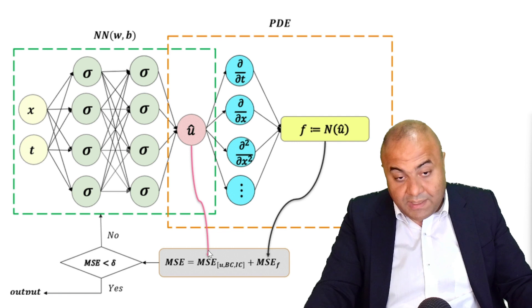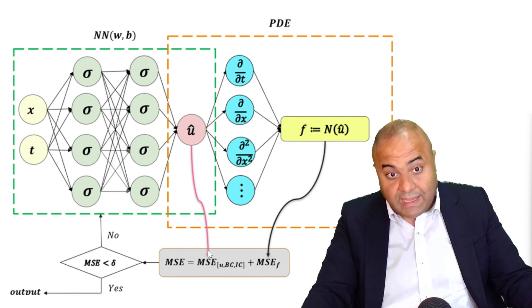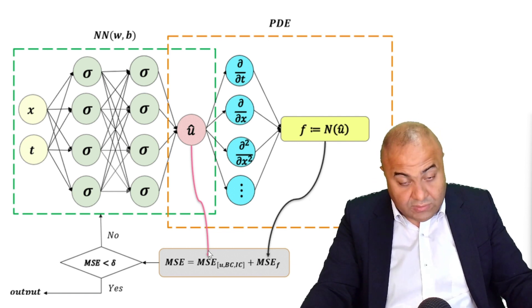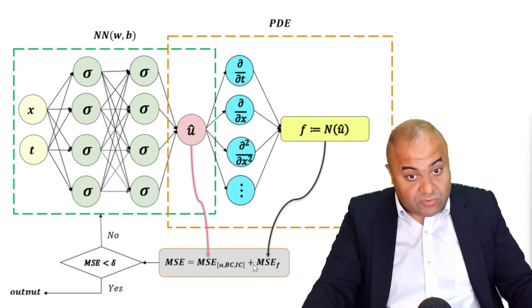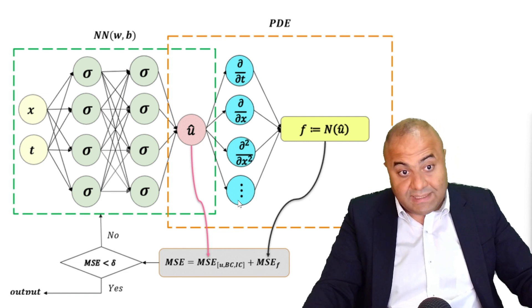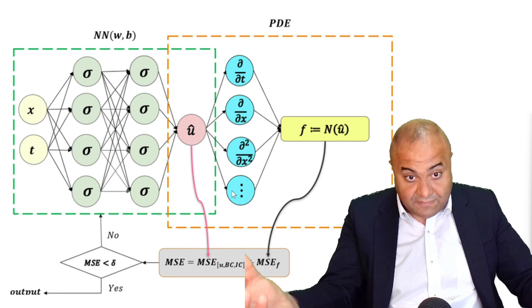The difference has to be minimized—this is what we call the data loss. The other loss that we need to reduce is the physics loss, or the PDE loss, that comes from the physics itself,